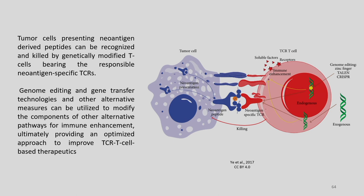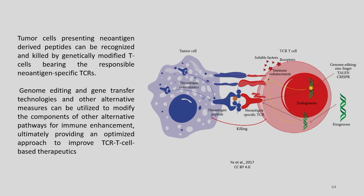Genome editing and gene transfer technologies and other alternative measures can be utilized to modify the components of alternative pathways for immune enhancement, ultimately providing an optimized approach to improve TCR-T cell-based therapies. The receptors in this TCR-T cell can be edited through any of these tools—ZFN, TALEN, and CRISPR—enabling neoantigen-specific TCR expression, and the neoantigen presentation shown in this figure helps in the killing of the tumor cells.